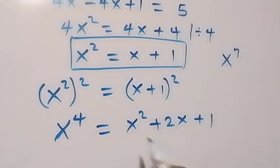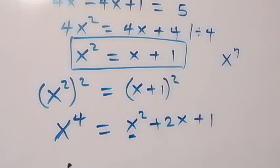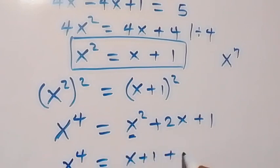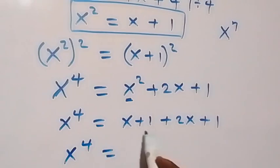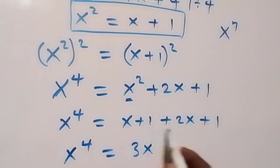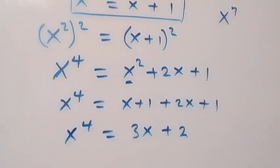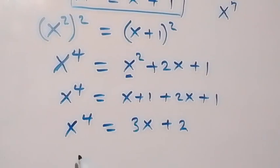We replace x squared with (x plus 1) in the expansion. So x to the power 4 equals (x plus 1) plus 2x plus 1, which simplifies to x to the power 4 equals 3x plus 2.